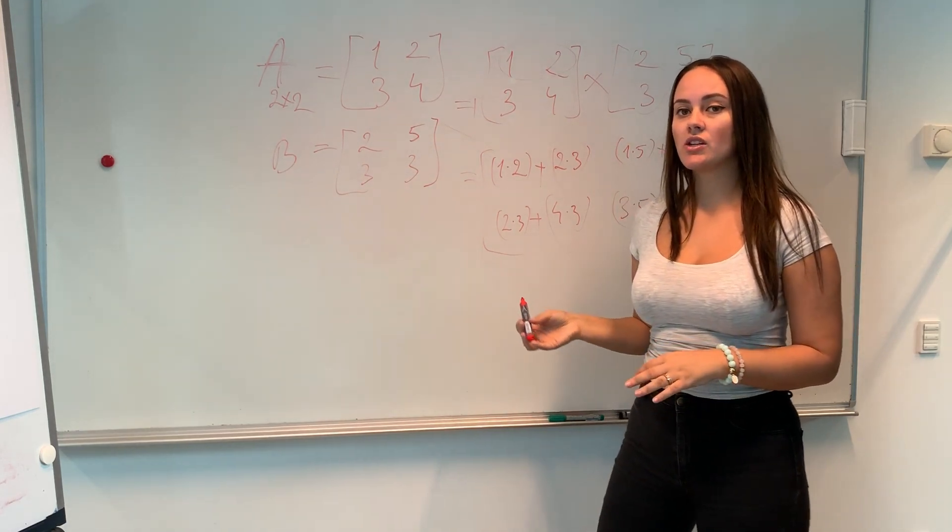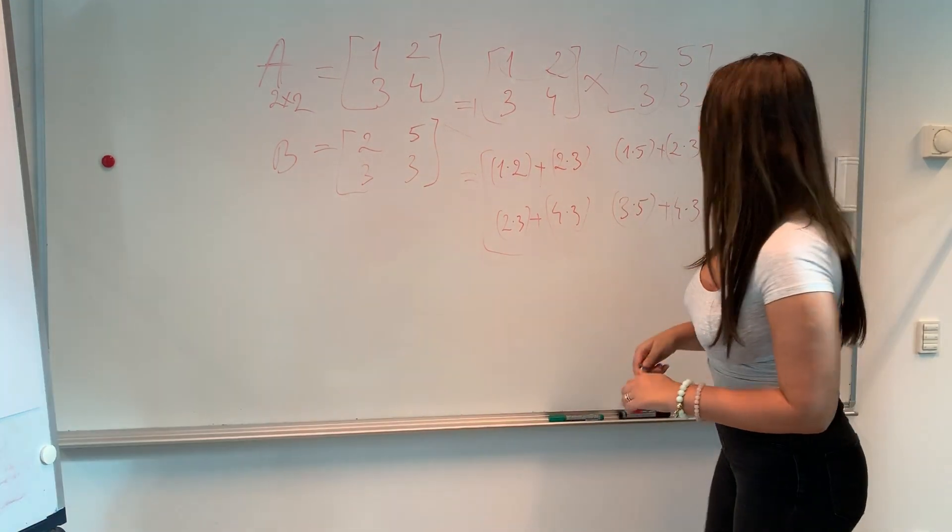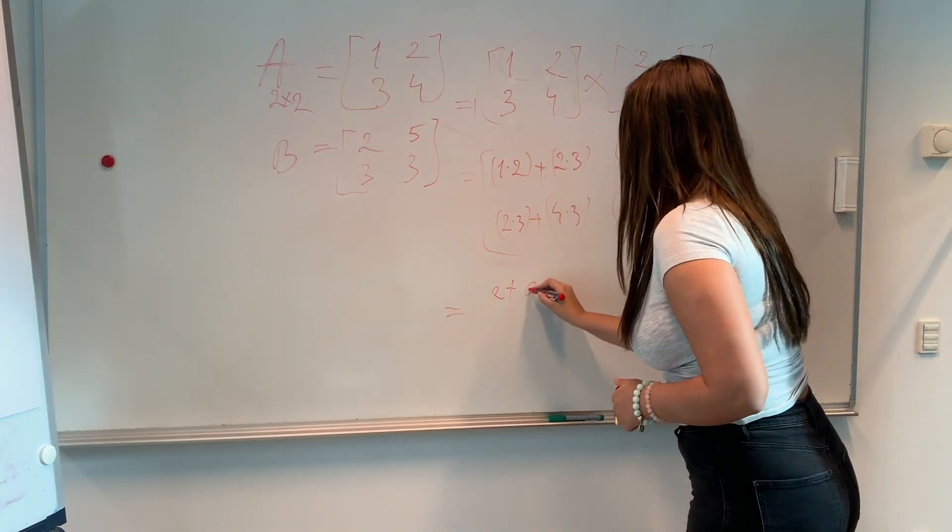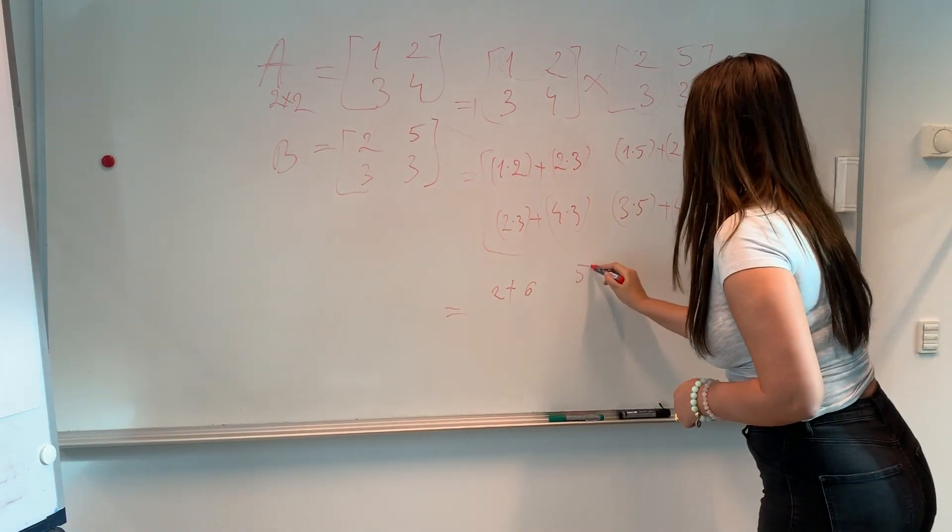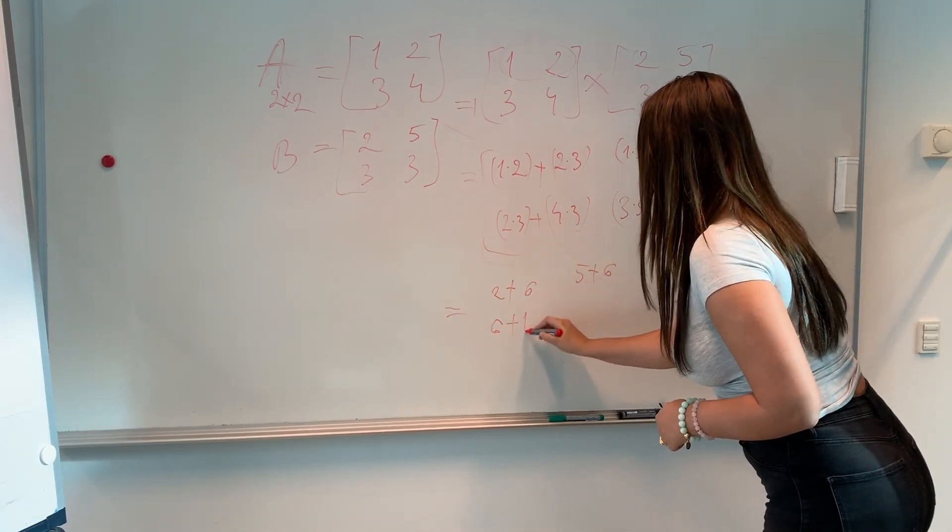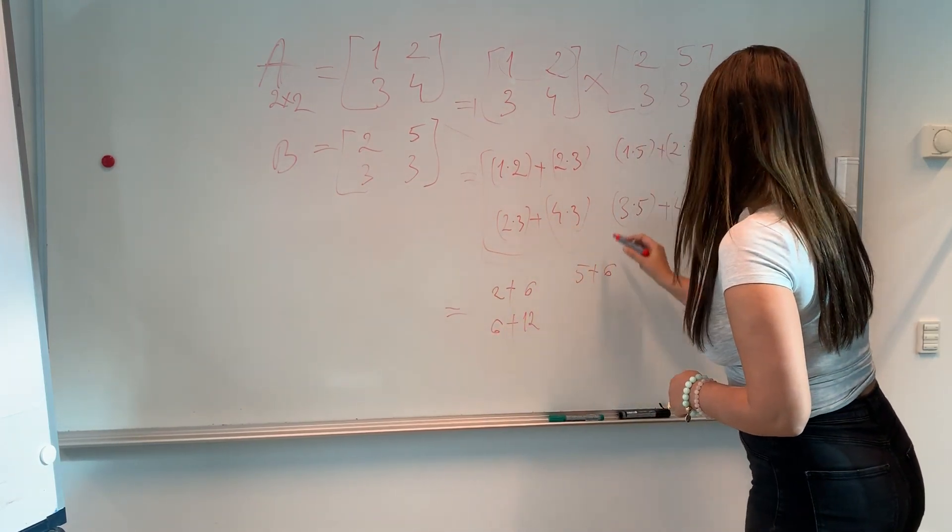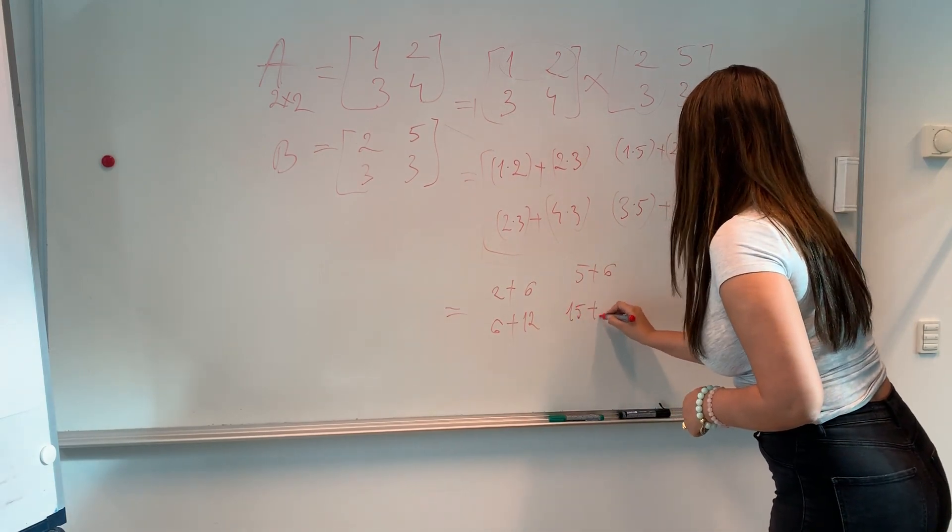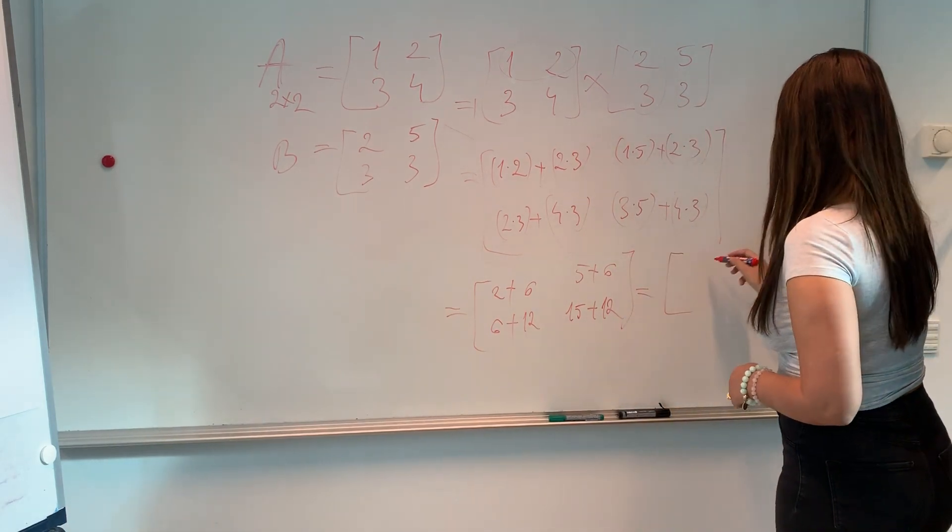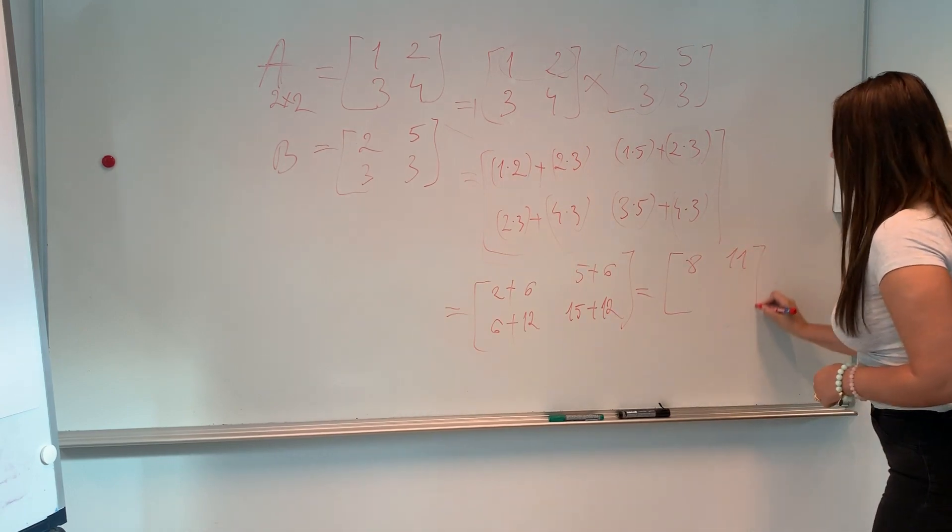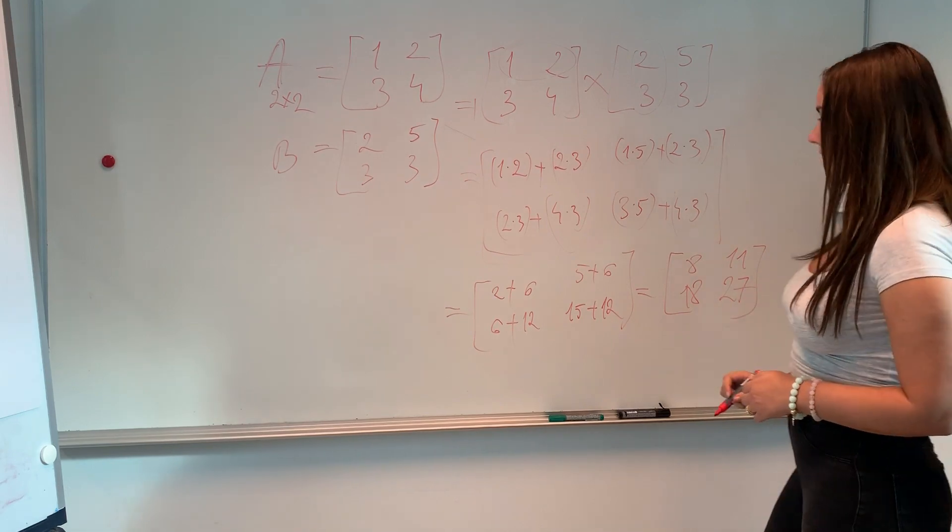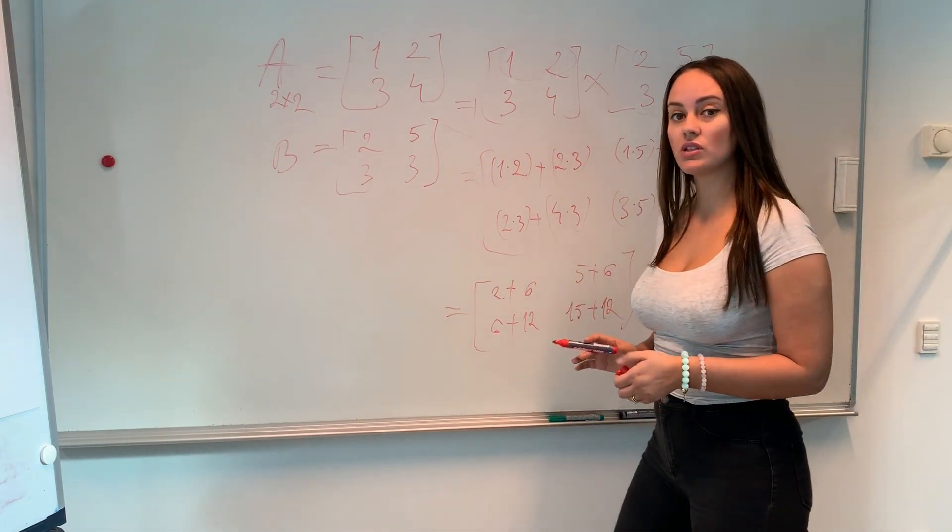So this is how the multiplication of any matrix is done. So let's calculate this. So it's going to be two plus six. Then five plus six. Then six plus twelve. And fifteen plus twelve. And this will give us the following result. So this is how the multiplication of matrices work.